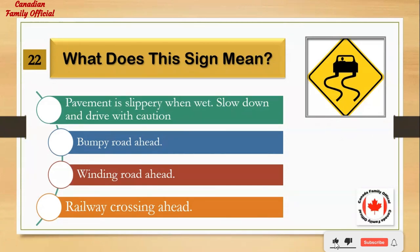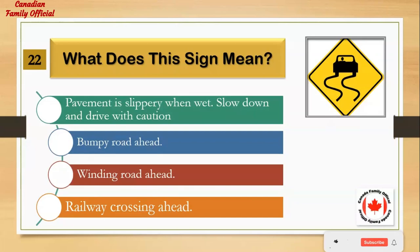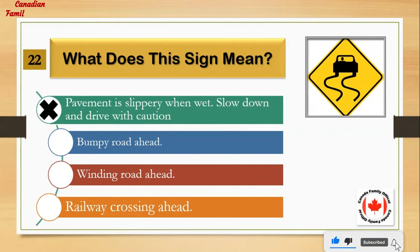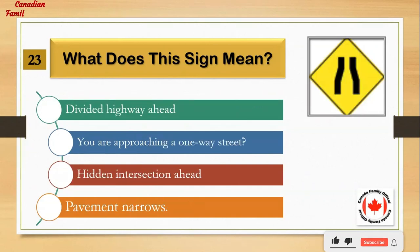What does this sign mean? Number 1: pavement is slippery when wet — slow down and drive with caution. Number 2: bumpy road ahead. Number 3: winding road ahead. Number 4: railway crossing ahead. And the answer is: pavement is slippery when wet — slow down and drive with caution.